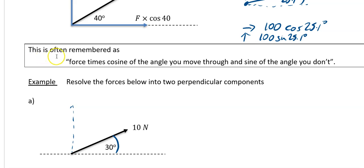This is often remembered as force times cosine of the angle you move through, and sin of the angle you don't. So cos if you've got the angle, sin if you don't.